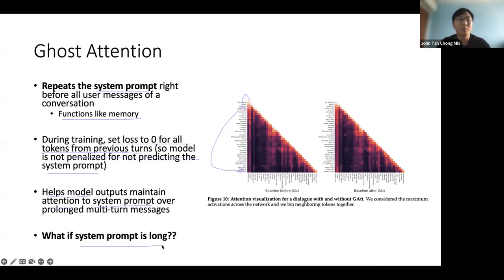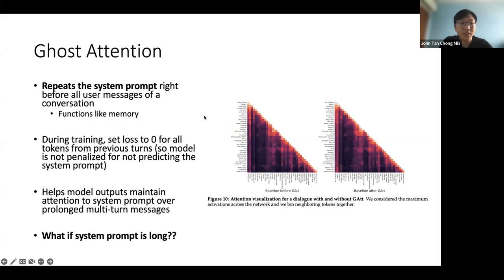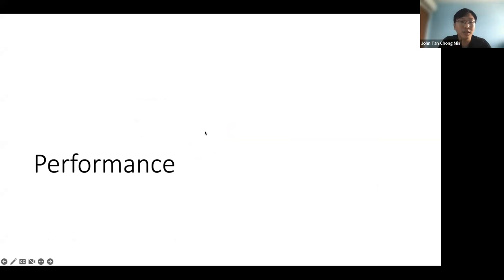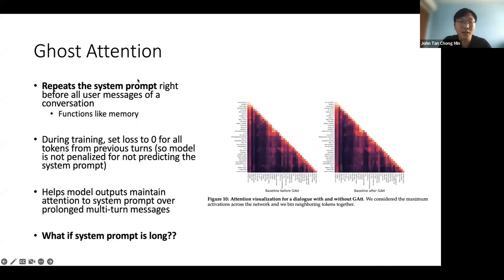The more fundamental issue remains: why is there such a lack of attention across longer tokens? LLaMA 2 probably can work quite well for small context lengths, but for long context it probably can't do that well. I don't really notice this issue happening in OpenAI, so this is probably related to how the positional embeddings are done in LLaMA 2.